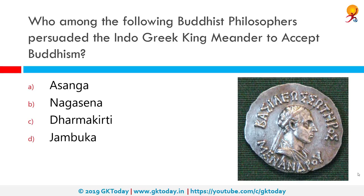Which Buddhist philosopher persuaded the Indo-Greek king Menander to accept Buddhism? That would be Nagasena. According to tradition, Menander embraced the Buddhist faith as described in the Milindapanha, a classical Pali Buddhist text on the discussions between Milinda and the Buddhist sage Nagasena.